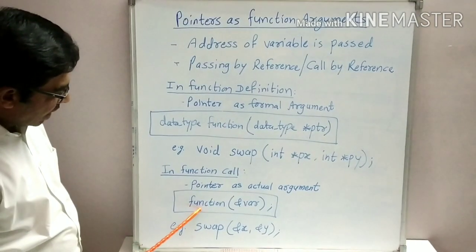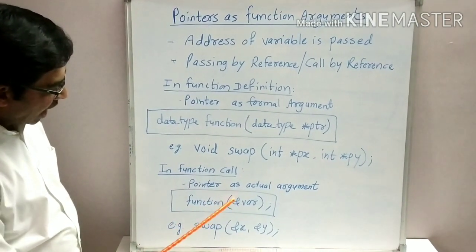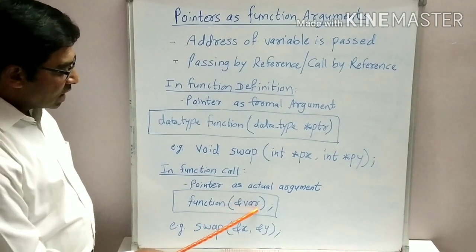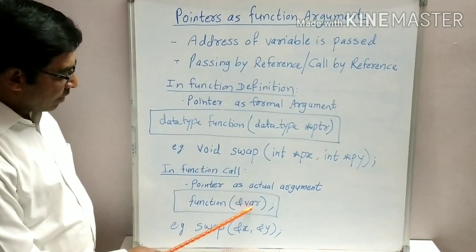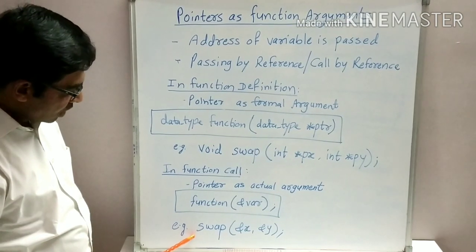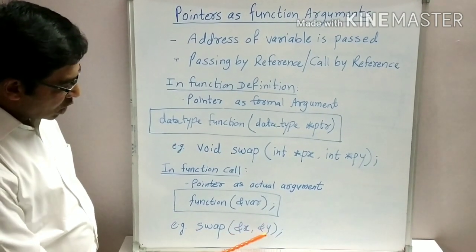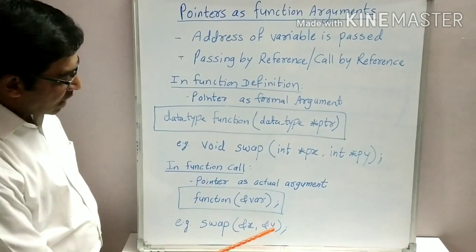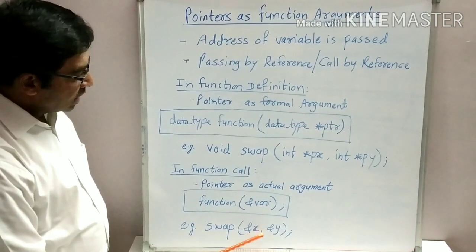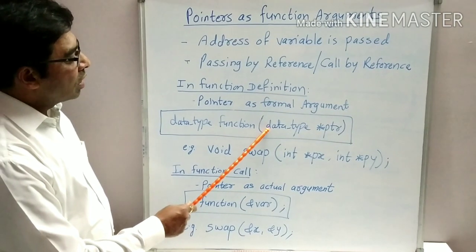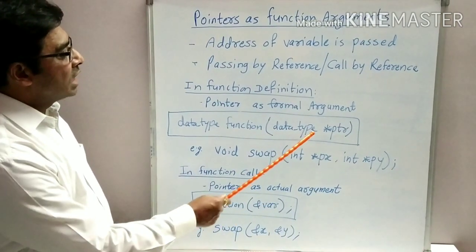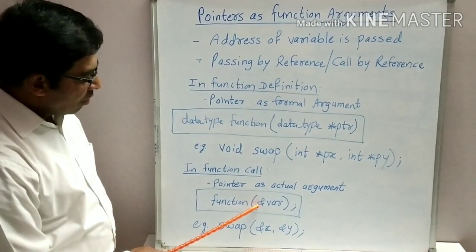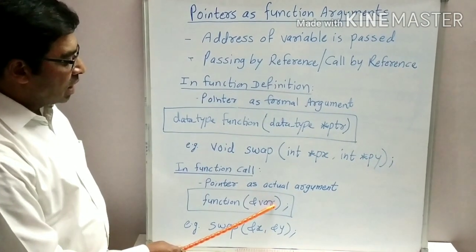This is the format: specify the function name and in the parentheses, you have to specify the address of the variable. For example, swap is the function and there are two addresses we are passing — one is ampersand X, ampersand Y — that is address of X and address of Y. So in the function definition, we declare the pointer variable as formal argument, while in the function call, we pass the address of the actual variable as argument.